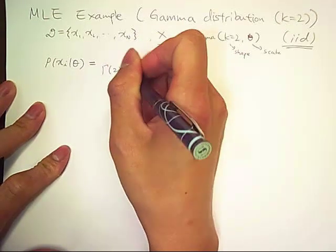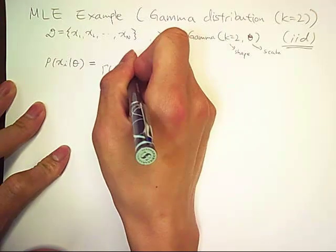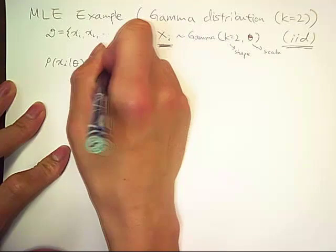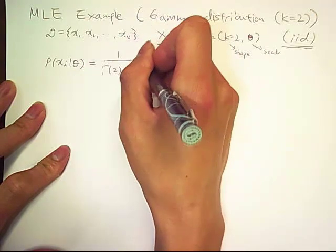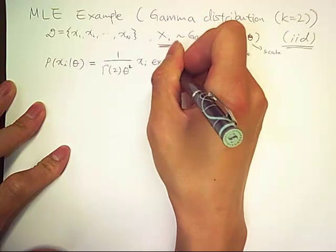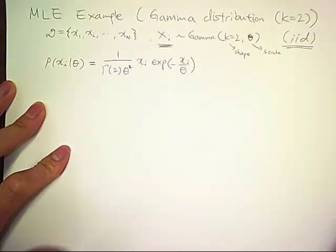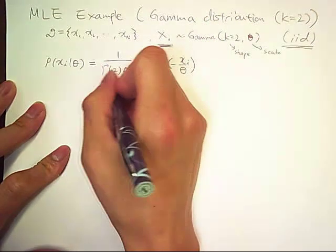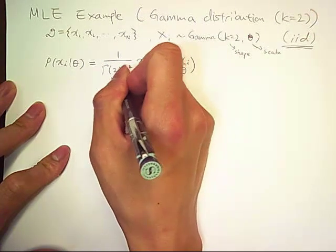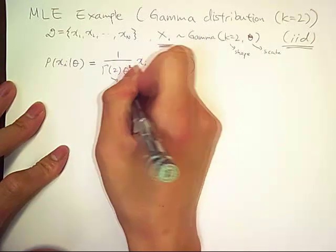Gamma distribution follows something like this. And then gamma of 2, gamma function of 2 is 1.